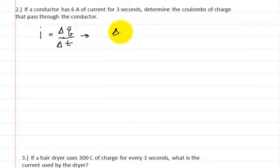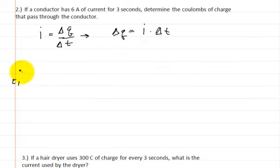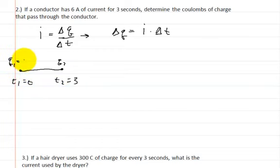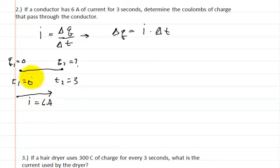We're going to manipulate this formula so that the change in charge is equal to the current times the change in time. Here we have t1 where it starts, and then sometime later t2, with q1 and then q2. At q1, you have a certain amount of charge that hasn't gone through yet — obviously 0. At q2, you have the amount of charge that has already gone through. So t2 is equal to 3 seconds, t1 is equal to 0 seconds, and q1 is 0 coulombs. Going through this wire, we have a current of 6 amps.